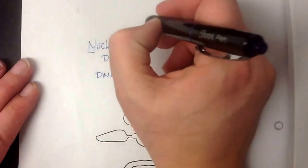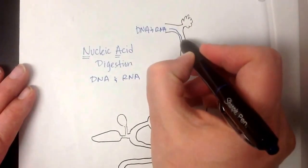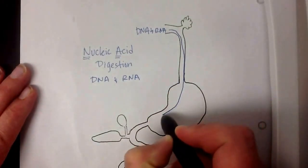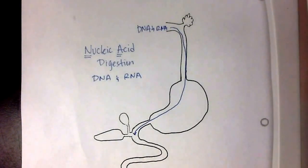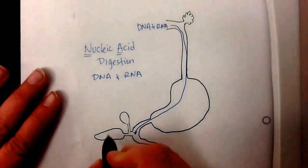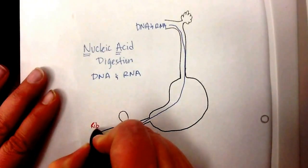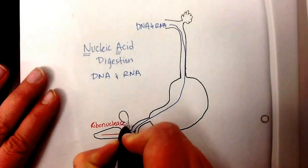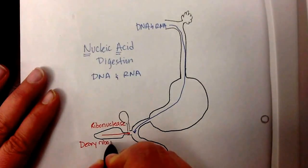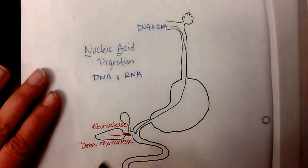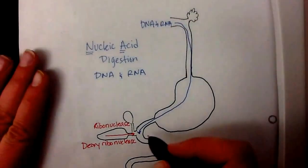So when we do that, we ingest the DNA and RNA here, and nothing happens with this chemical digestion until we get down to the duodenum. And in the pancreas, the pancreas has two enzymes that it releases. It releases ribonuclease and deoxyribonuclease, and that begins the breakdown process of RNA and DNA.